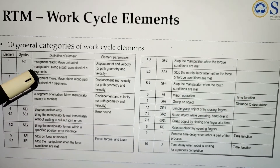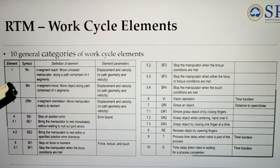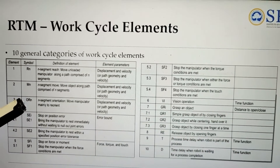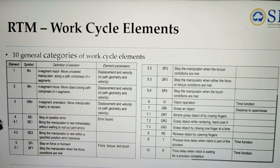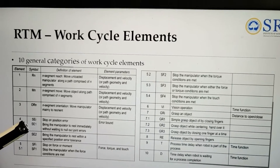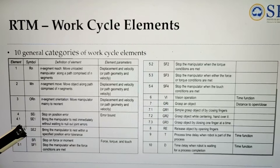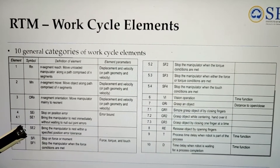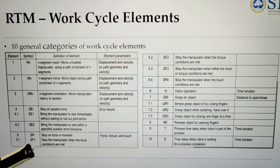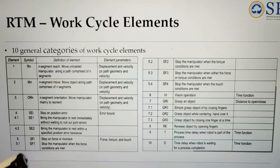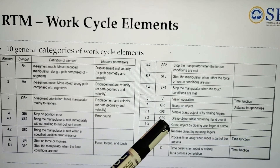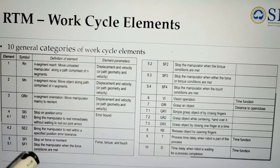The symbol RN moves the unloaded manipulator along a path comprised of N segments. MN denotes moving an object along a path comprised of M segments. ORN denotes moving the manipulator mainly to reorient. SE1 stops on position error, bringing the manipulator to rest immediately without waiting. SE2 brings the manipulator to rest within a specified position error tolerance. SF categories denote stop on force or moment — stopping the manipulator when force, torque, or touch conditions are met.